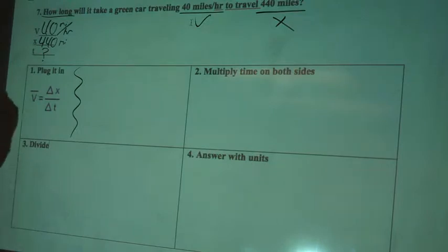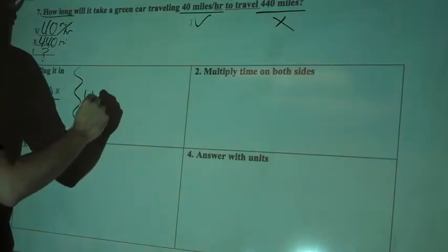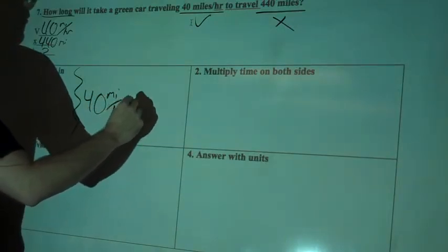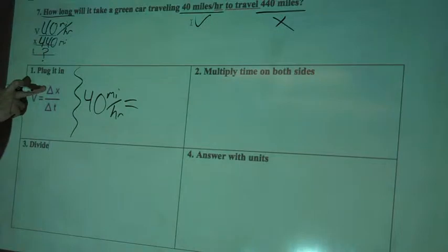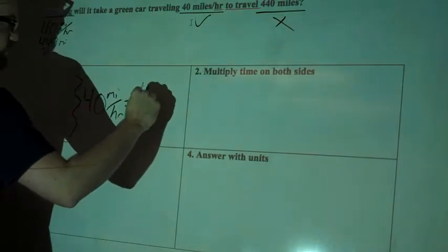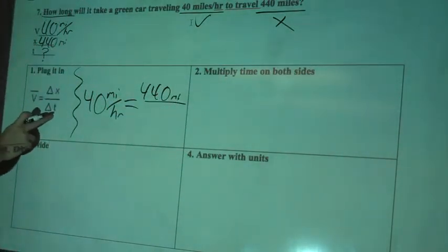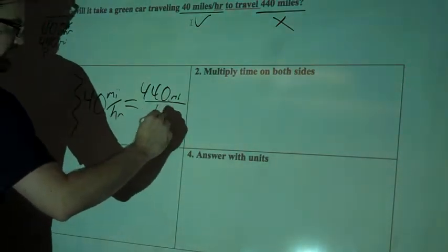Step 1, plug it in. I'm going to plug in what I know. My velocity is 40 miles per hour, so I'll write down 40 miles per hour equals change in distance over change in time. My change in distance is 440 miles, so that's 440 miles. And change in time, I don't know. I'm trying to find out how long will it take, so I'm going to write T down here.